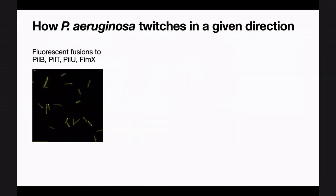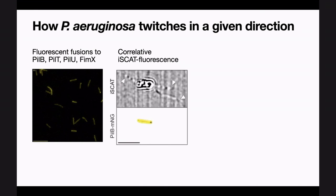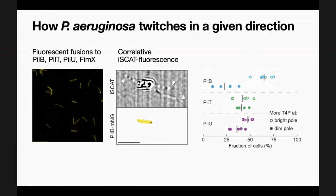We went further by looking at what's happening inside the cell and how this mechanosensory system affects molecular motors. We generated native GFP fusions to many of the molecular motors, including the extension and retraction motors. With iSCAT, we performed correlative imaging: looking at pili while simultaneously looking at the distribution of molecular motors using fluorescence, all on the same microscope simultaneously and dynamically. We found a strong correlation between the localization of the extension motor — which polymerizes monomer subunits — and the pili. Whereas the retraction motor is placed at both poles simultaneously, irrespective of pili number, suggesting it's constitutively active.